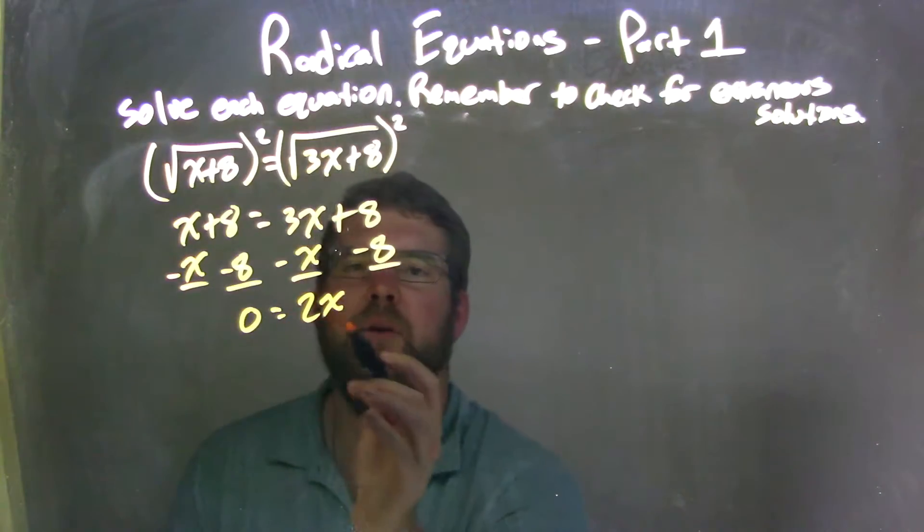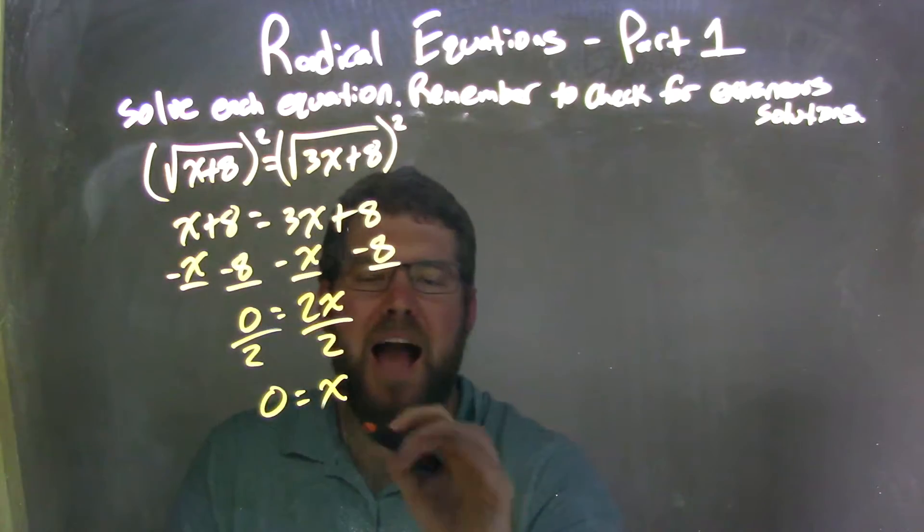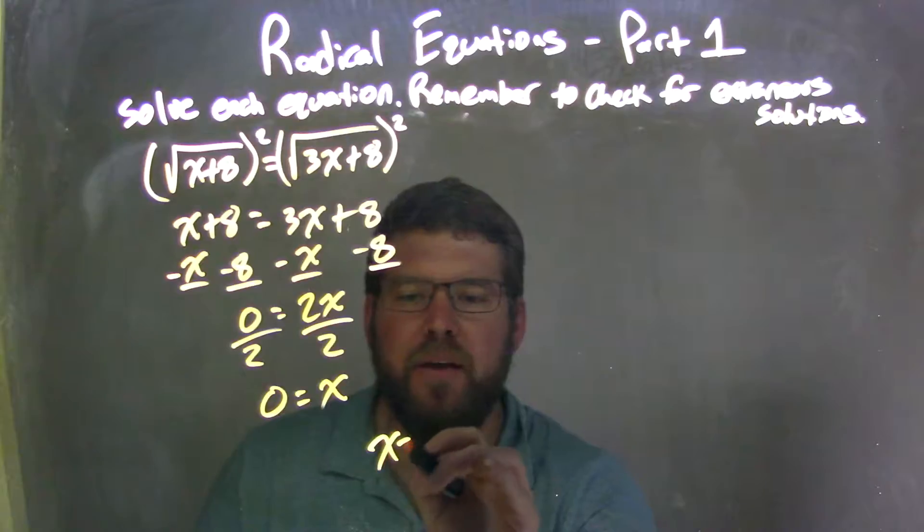Well, I have 0 equals 2x, I'm going to divide by 2, and now I have, well, 0 divided by 2 is just 0, so 0 equals just an x. I can rewrite that to be x equals 0.